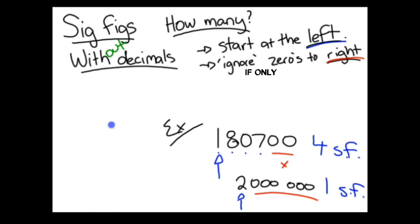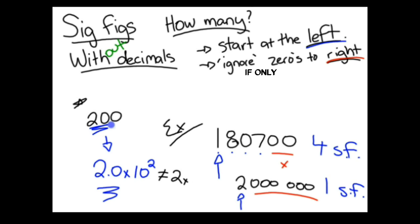If ever we wanted to show that a zero is in fact significant, say, if there's a 200, but the first zero is actually significant, we can simply put it into scientific notation, 2.0 times 10 to the 2. Therefore, the decimal rules apply, and it shows that it has 2 sig figs. Note that this is not the same as 2 times 10 to the 2, as it is showing it only has 1 sig fig.